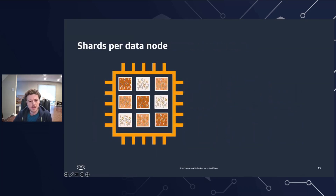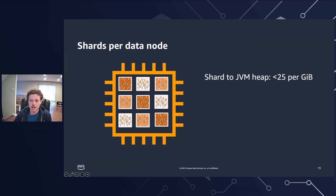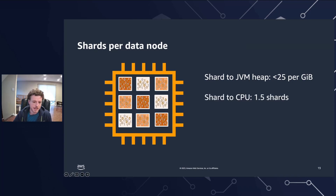You also need to consider the number of shards per data node. There are two important ratios to consider here. First is the shard to JVM heap ratio. The total number of shards that a node can hold is proportional to the node's Java Virtual Machine, or JVM, heap memory. Aim for 25 shards or fewer per gigabyte of heap memory. For example, a node with 32 gigabytes of heap memory should hold no more than 800 shards. Although shard distribution can vary based on your workload patterns, there is a service quota of 1,000 shards per node that cannot be exceeded. The second is the shard to CPU ratio. When a shard is involved in an indexing or search request, it uses a virtual CPU to process that request. As a best practice, use an initial scale point of 1.5 vCPU per active shard.